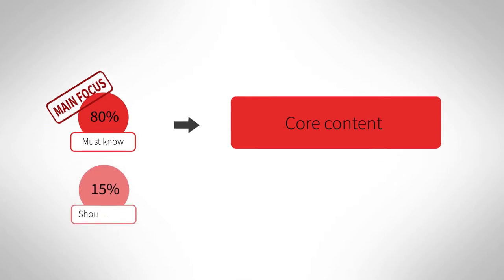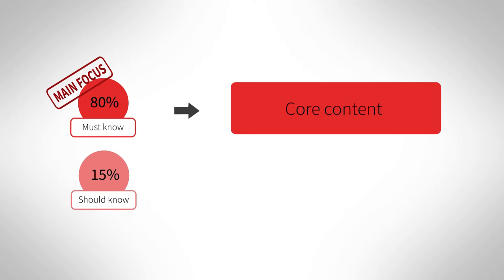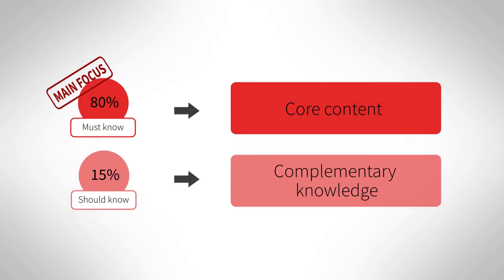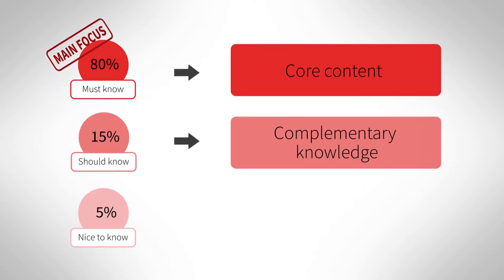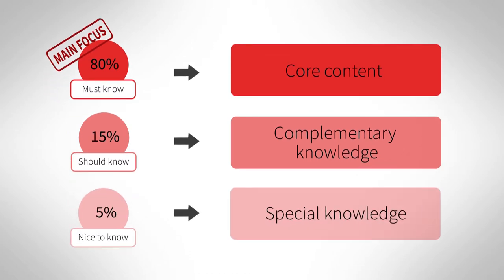Approximately 15% of the course content is complementary knowledge. This should-know content adds theoretical details and clarifies less common applications. Approximately 5% of the course content is special knowledge. This nice-to-know content further reinforces the student's command of the content.